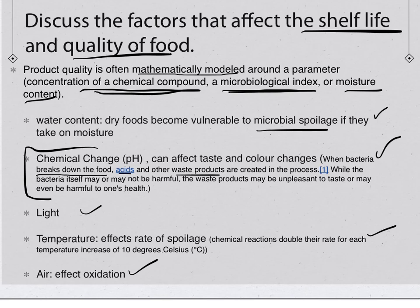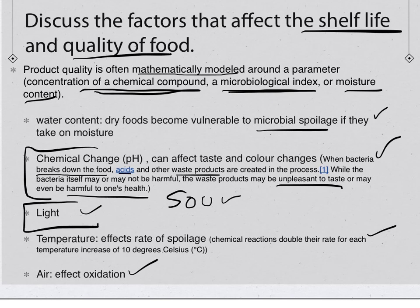Those waste products create a sour taste. When milk goes bad, it decays and produces carboxylic acids, which taste sour and lower the pH. This can be unpleasant and potentially harmful to one's health. Light also affects shelf life, similarly to what we discussed in organic chemistry — specifically ultraviolet radiation.